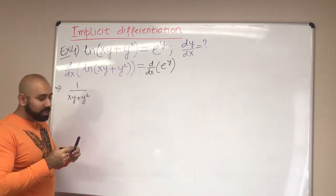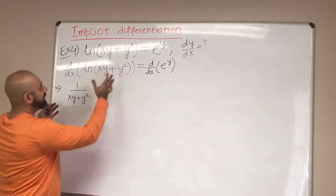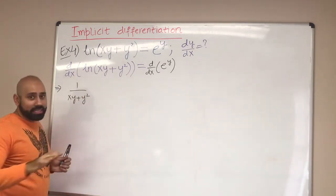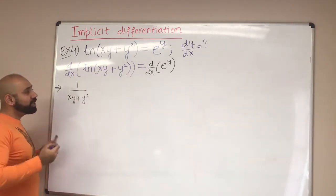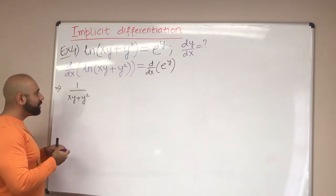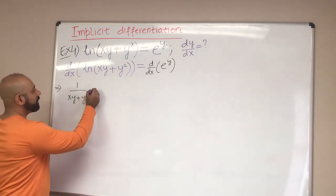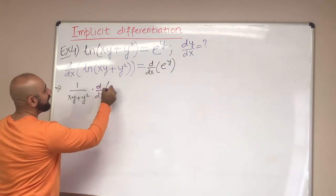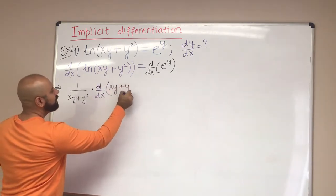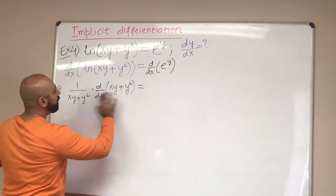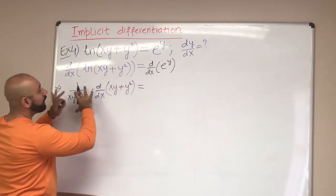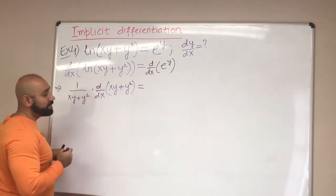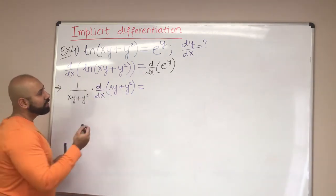If the argument were just x, we'd have 1/x and be done. But here we have something more complex, so we use the chain rule — we multiply by d/dx of the inner function. The inner function has two pieces: xy + y². In this step, we're not evaluating that derivative yet; we're just executing the first piece and then multiplying by d/dx of the inner.